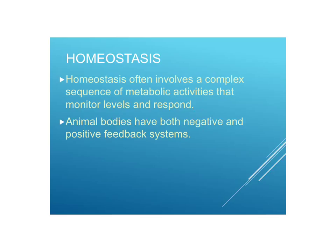In animal bodies there are both negative feedback systems and positive feedback systems. The most common is a negative feedback system, where the body monitors the levels of something like temperature, glucose, or oxygen, and if it goes too low there's a mechanism that increases the level. That is a negative feedback — or if you have too much, it works to decrease the level.